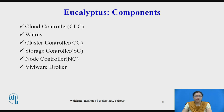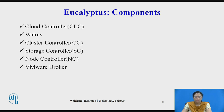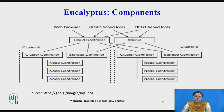The list of Eucalyptus components includes: Cloud Controller (CLC), Walrus, Cluster Controller (CC), Storage Controller (SC), Node Controller (NC), and VMware Broker. We will now see the details of each of these components one by one.